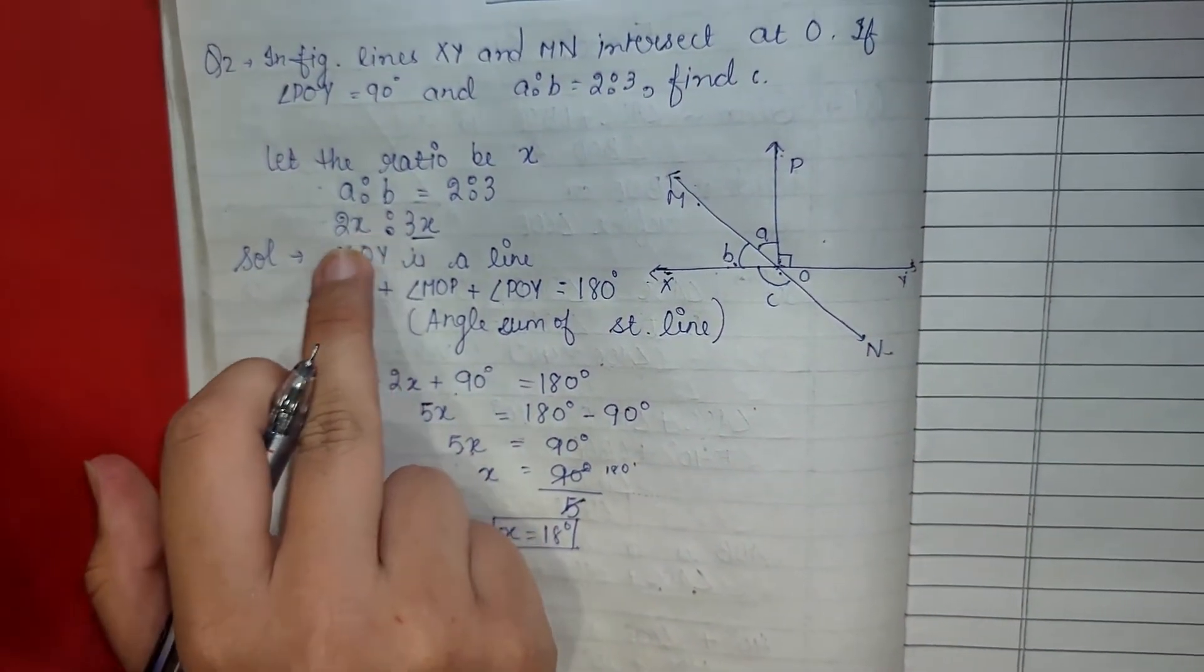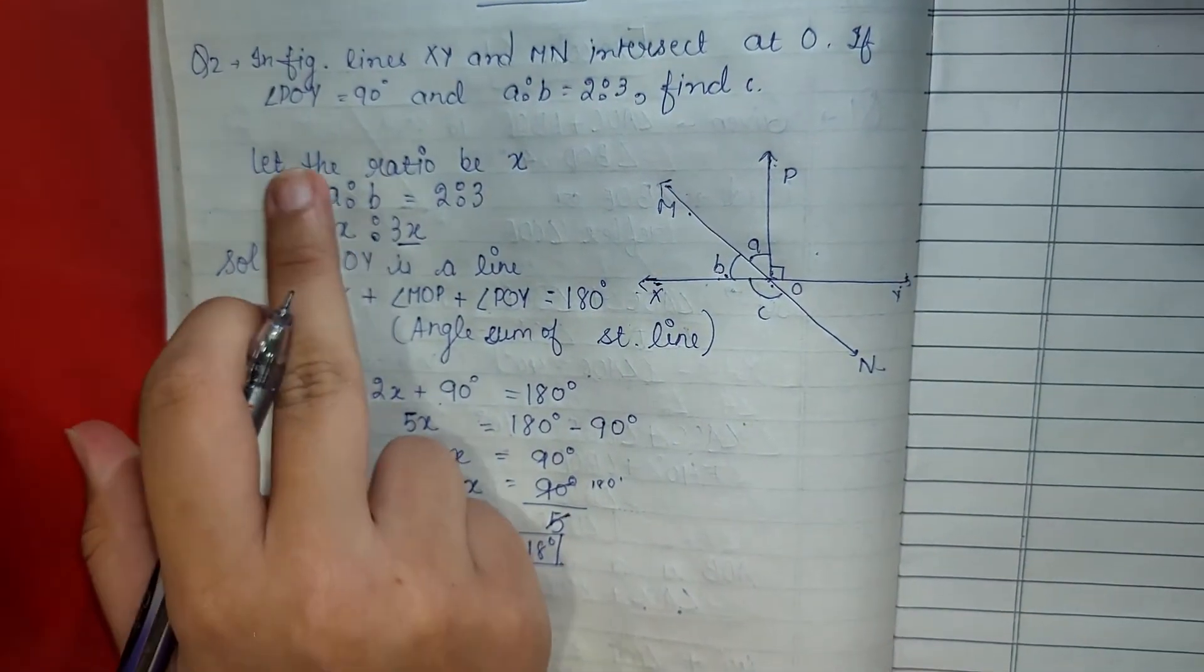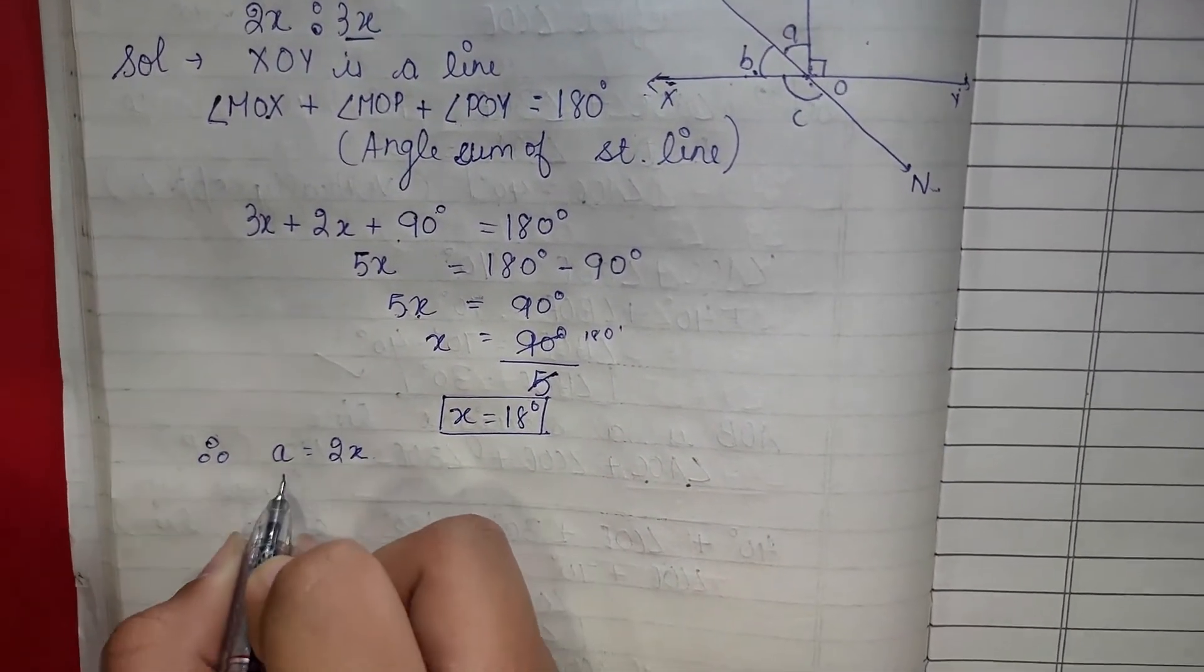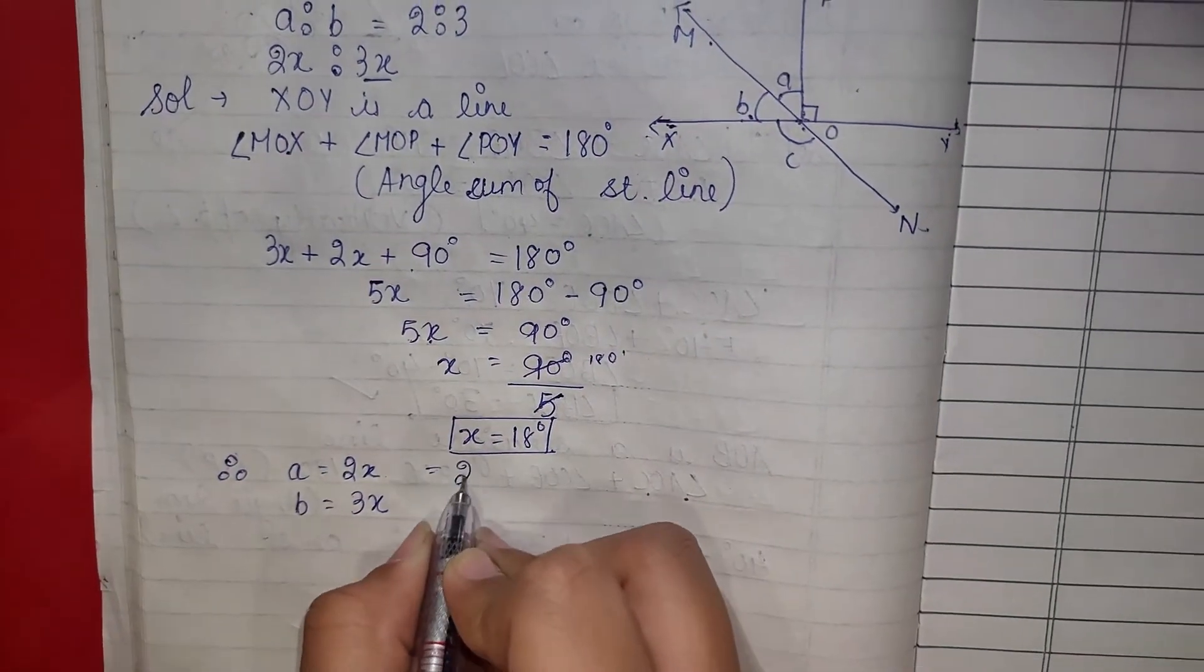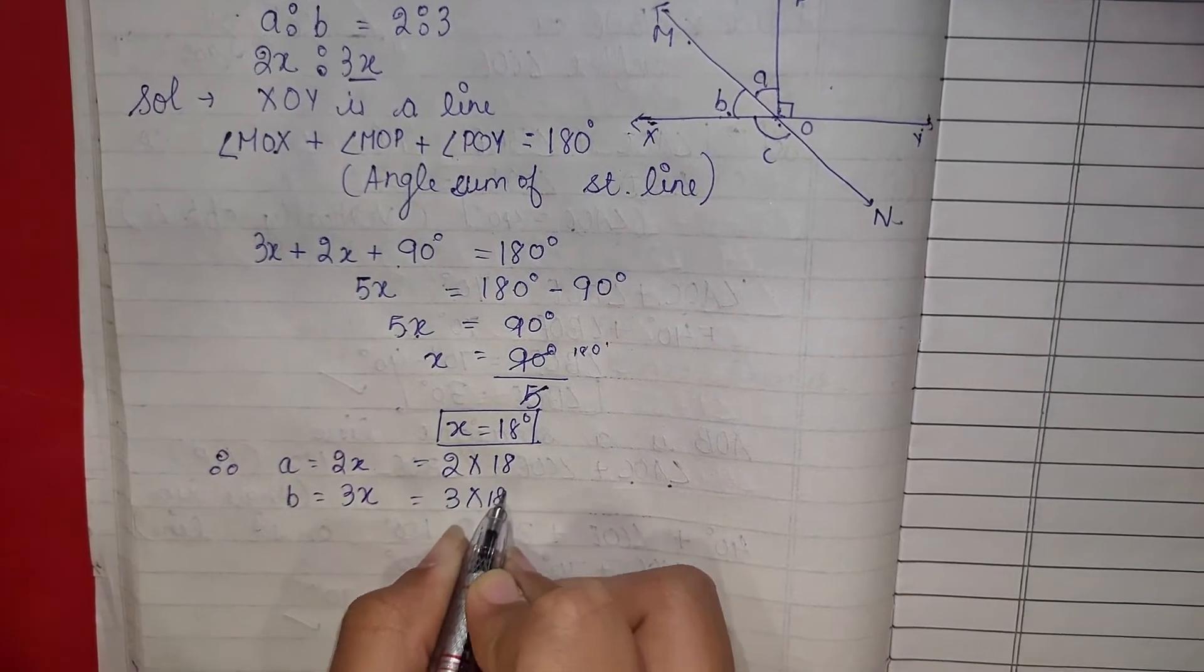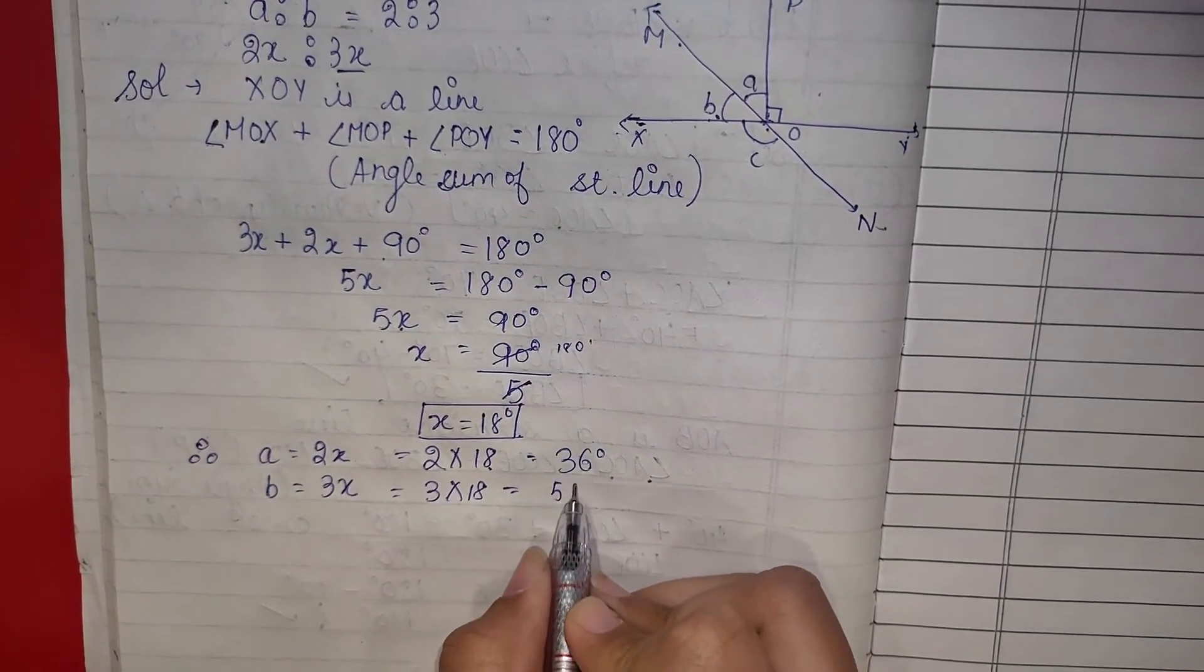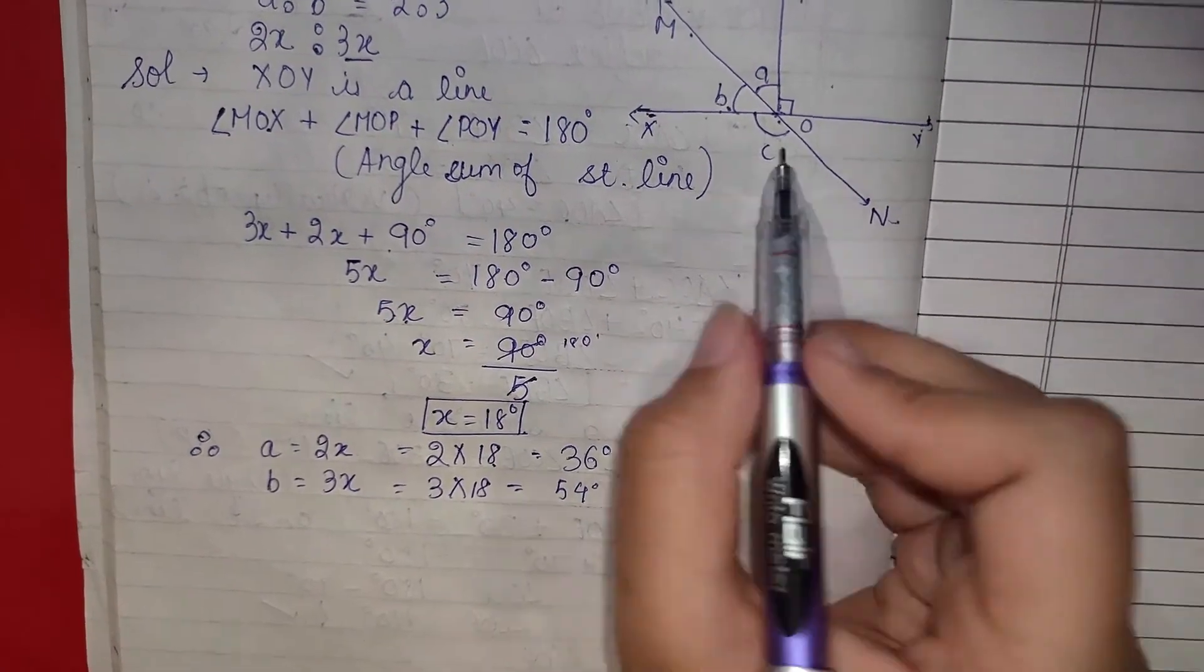a की value हमारे पास 2x है तो हम इसमें अगर x की value put करेंगे तो हमारे पास a की value आ जाएगी। Therefore a equals to 2x and b equals to 3x. 2 into 18 and 3 into 18. 2 into 18 is equals to 36 and 3 into 18 is equals to 54. तो हमारे पास a की value भी आ गई और b की value भी आ गई।